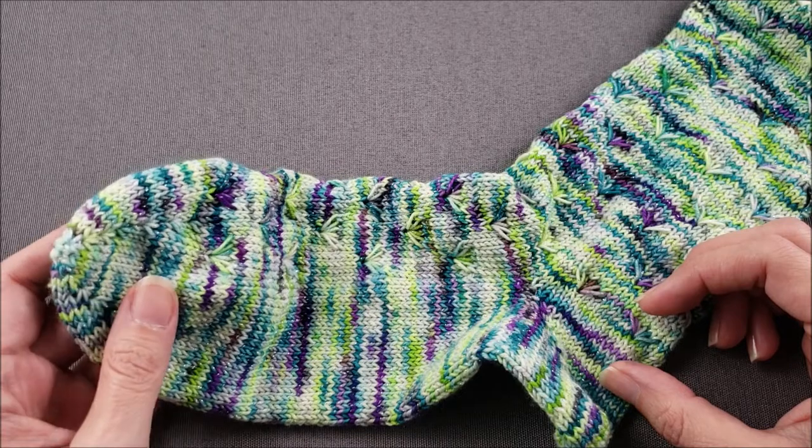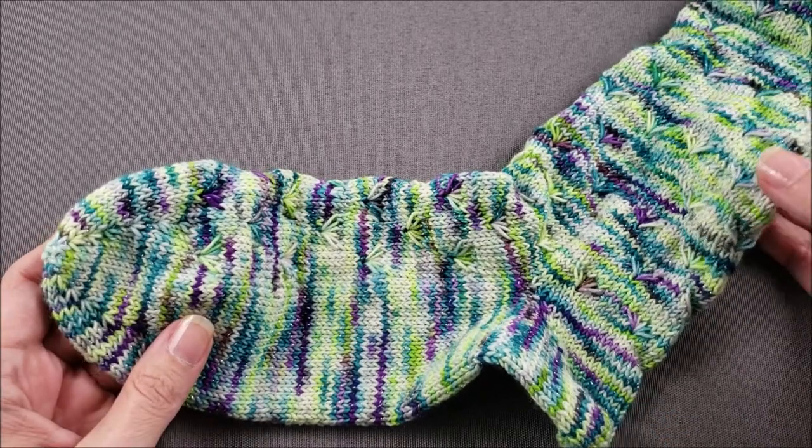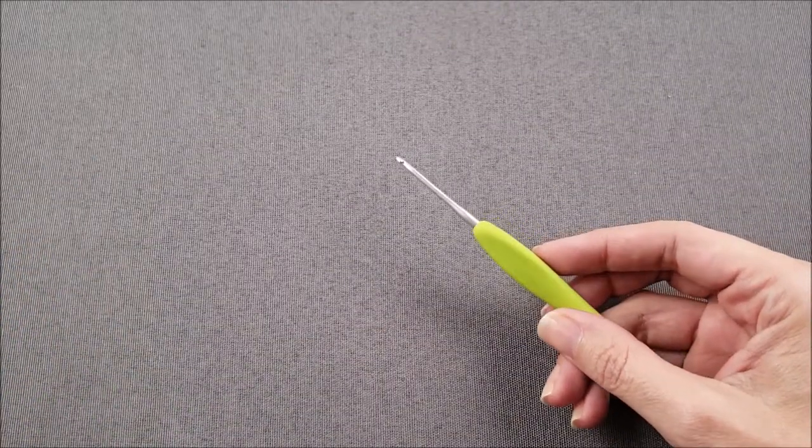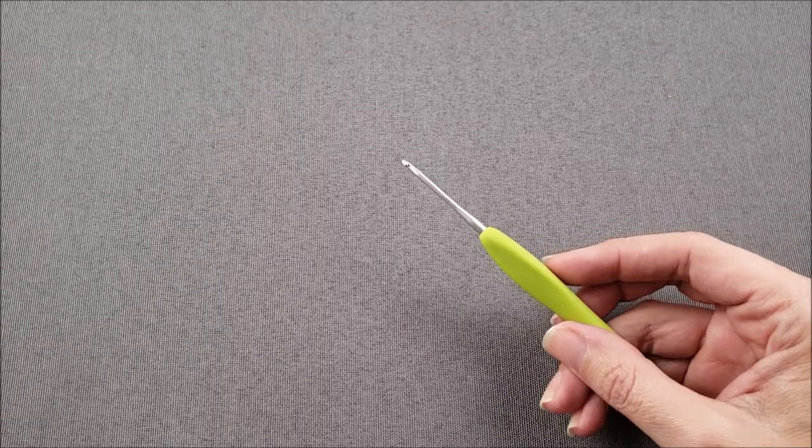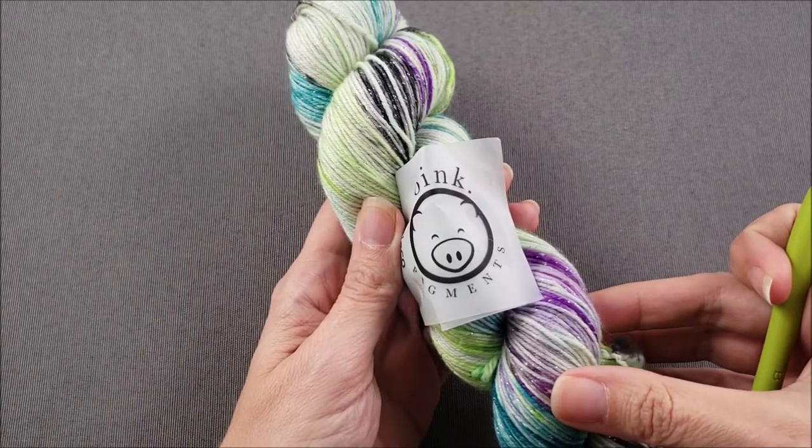If you're a crocheter, this cast-on is very similar to starting a project with a magic ring. To begin, you'll need a crochet hook that's the same size or slightly smaller than the knitting needles you will be using and of course you'll need some yarn. Today I am using disco yarn from Oink Pigments.